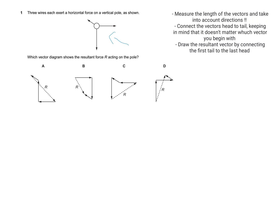First of all, we need to know that we cannot change the directions of the vectors given in the diagram. Just by knowing this, we can tell that A is wrong because two of the vectors are changed — the vertical one and the direction of another vector, which is supposed to be pointing a different way.